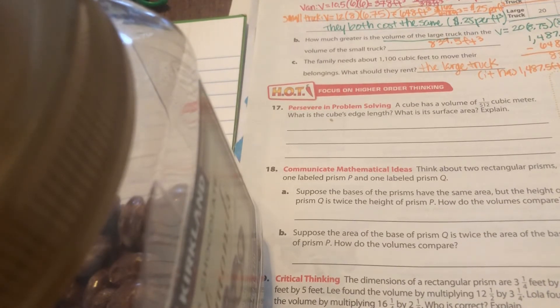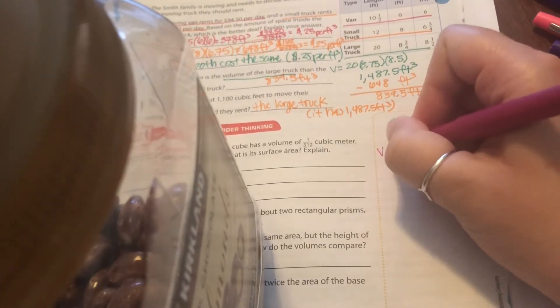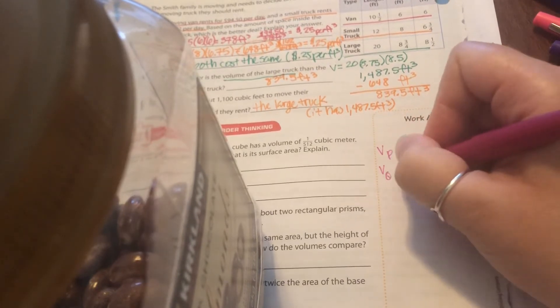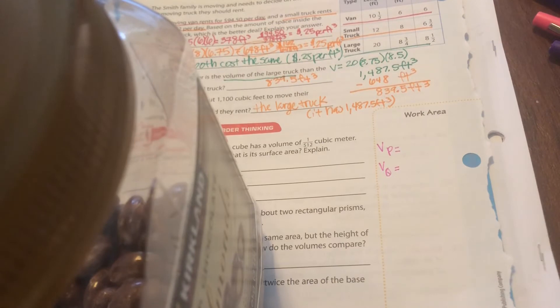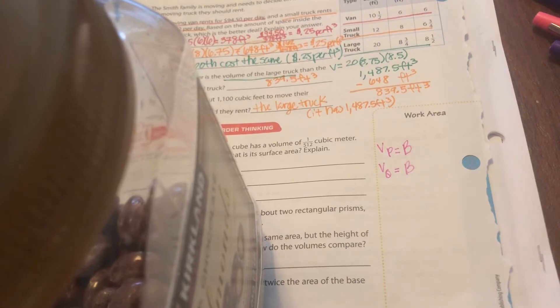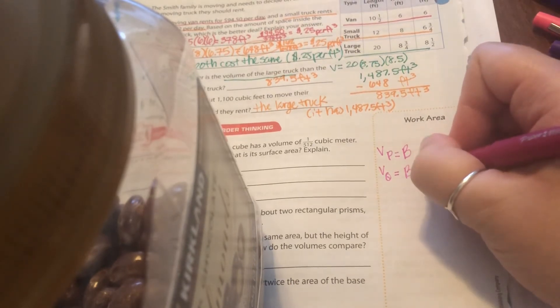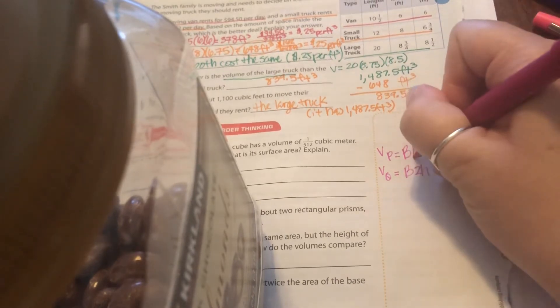Okay. Question 18 says, think about two rectangular prisms. One is labeled prism P and the other is labeled prism Q. Okay. Suppose the bases of the prisms have the same area. So off to the side right here. Let's say we have prism P and prism Q. It says, so for problem 18A, suppose the bases of the prism have the same area. So area of the base is that big B. But the height of prism Q, okay, so Q, is twice the height of prism P.